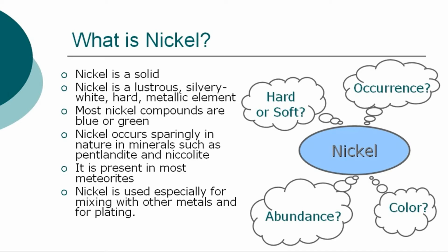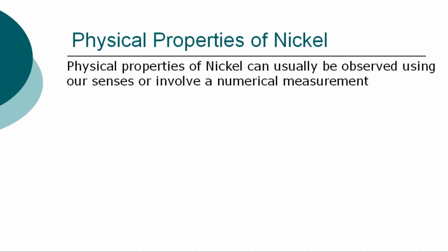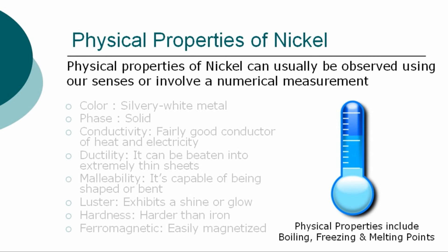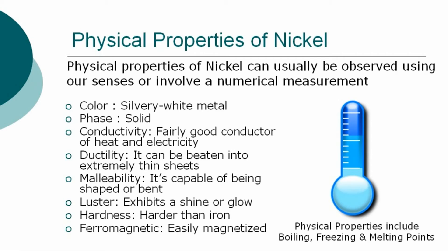Nickel is present in most meteorites. It is used especially for mixing with other metals and for plating. The physical properties of nickel include being a silvery-white metal that is a fairly good conductor of heat and electricity. It can be beaten into extremely thin sheets and is capable of being shaped or bent. Nickel exhibits a shine or glow and is harder than iron.